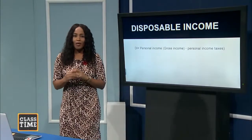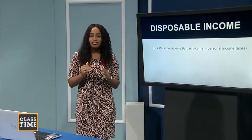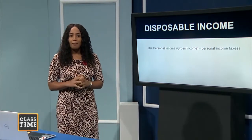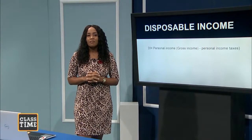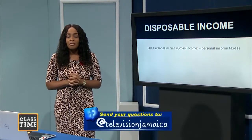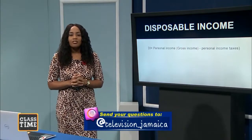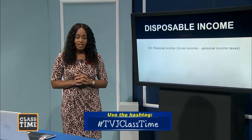Before we move on, let's recap what we've covered. We are doing Module 1, Topic 1 of Unit 2: National Income Accounting. Macroeconomics looks at what's happening in the economy as a whole, examining decisions among different economic agents — government, households, firms, and the international sector. There are four macroeconomic objectives: inflation, economic growth, balance of payments, and unemployment.